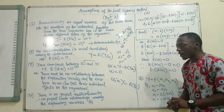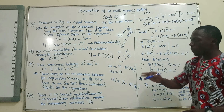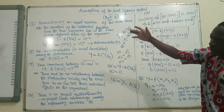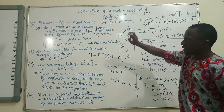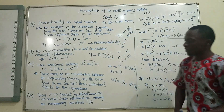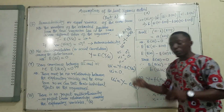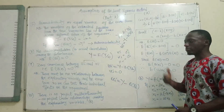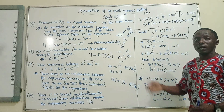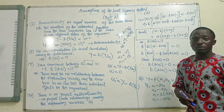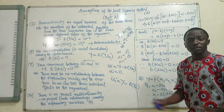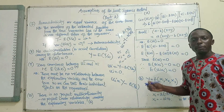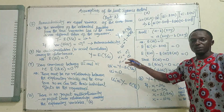The last assumption is that there is no perfect multicollinearity — no perfect linear relationships among the explanatory variables. Assumptions 7, 8, and 9 deal with the error term, but assumption 10 is only about the regressors themselves. This assumption applies when you have more than two variables, that is in multiple regression analysis. The assumption is that there is no perfect linear relationship between or among the regressors in question.